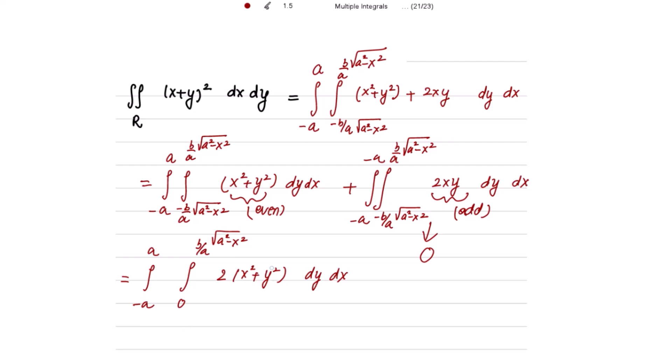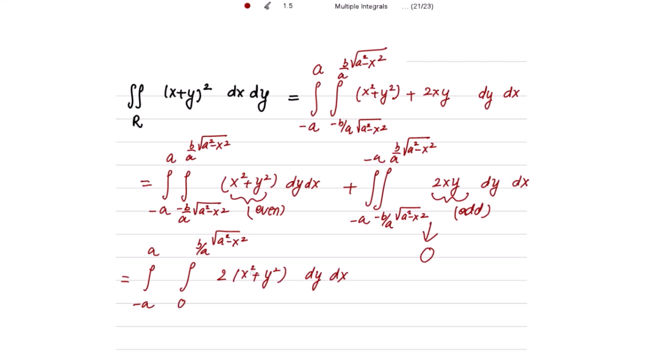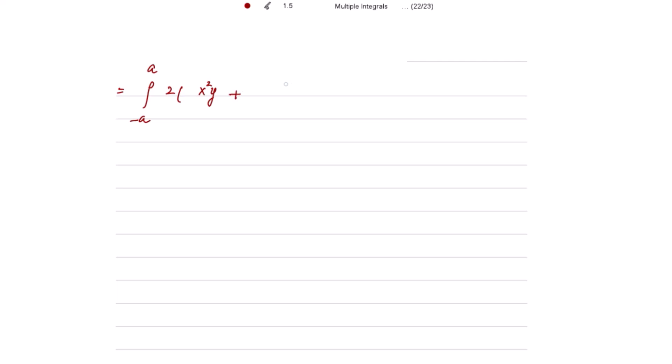Now solving this integral by integrating with respect to y. The integral of x² is x²y and the integral of y² is y³/3. So we get twice [x²y + y³/3] with limits from 0 to (b/a)√(a² - x²), all integrated with dx from -a to a.